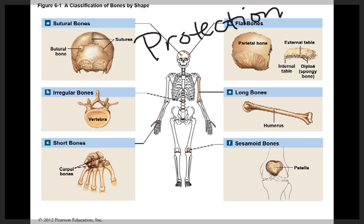Bones offer protection. The ribs, the skull, the vertebrae, and the pelvis all protect very valuable internal organs.